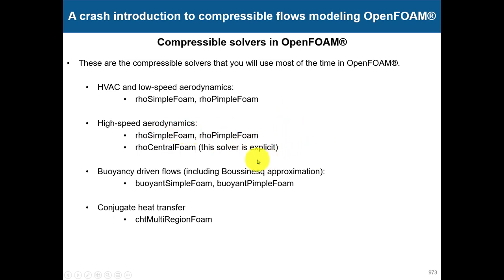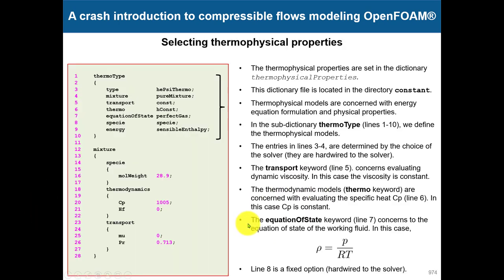For buoyancy-driven flows, we can use the Boussinesq approximation — this is the one for temperature. You have buoyantSimpleFoam for steady and buoyantPimpleFoam for unsteady. For conjugate heat transfer, there is a dedicated solver. To select thermophysical properties, there is a new dictionary called thermophysicalProperties in the constant folder.